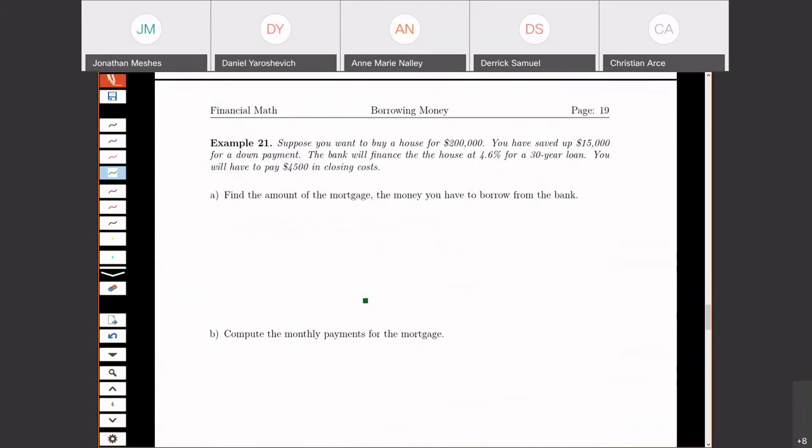Let's look at an example of buying a house. We want to buy a house. The house costs $200,000. We've saved up $15,000 for down payment. The bank will finance the rest at 4.6%. They're going to give us a 30-year loan, and we're going to have $4,500 in closing costs.